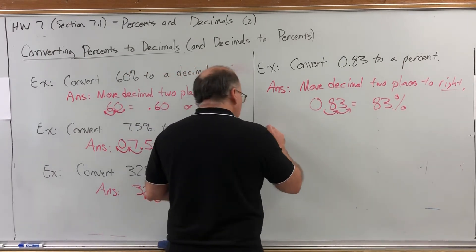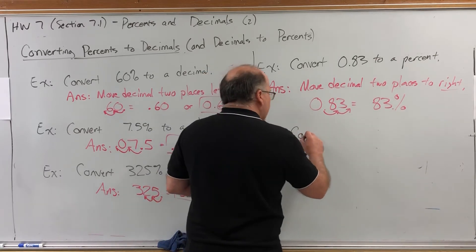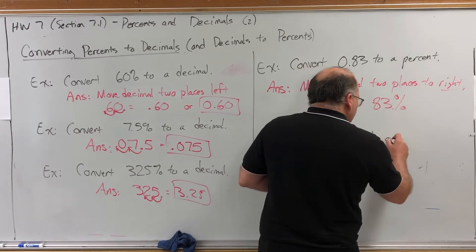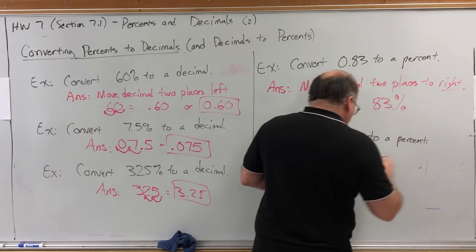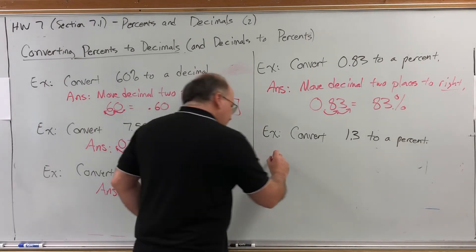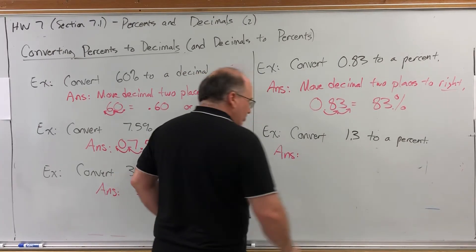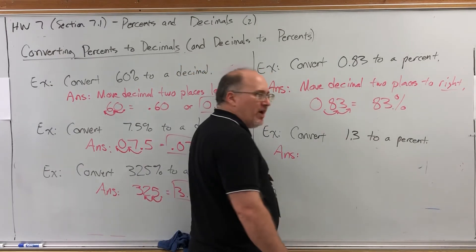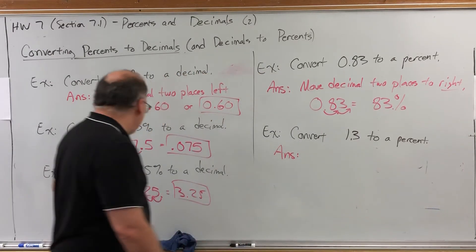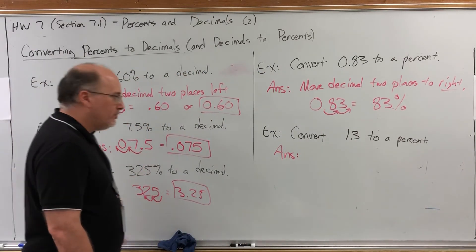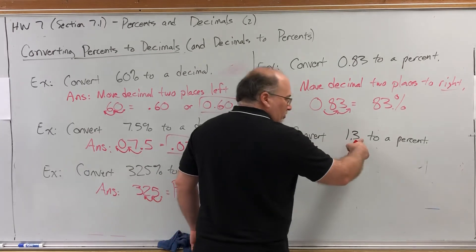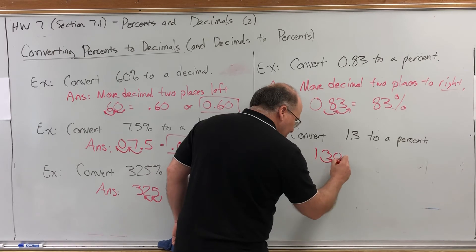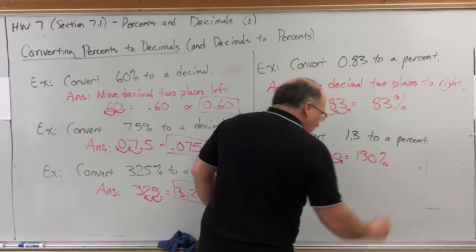One more example. Convert 1.3 to a percent. Since we're converting from a decimal to a percent, we're going to move the decimal two places to the right. However, there's only one digit to the right of the decimal. So just like in the case over here where we didn't have enough digits, we can insert a zero to the right of the three before moving the decimal two places. So we would get 130%.